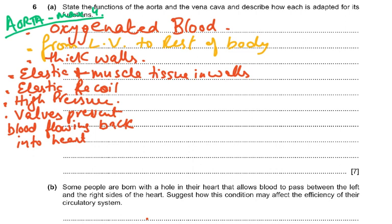Note that for the seven-mark part, marks are divided: four marks for the aorta and three for the vena cava. So the maximum for the aorta section is four — even if you give ten points about the aorta, you won't get more than four marks. Make sure you cover both vessels.